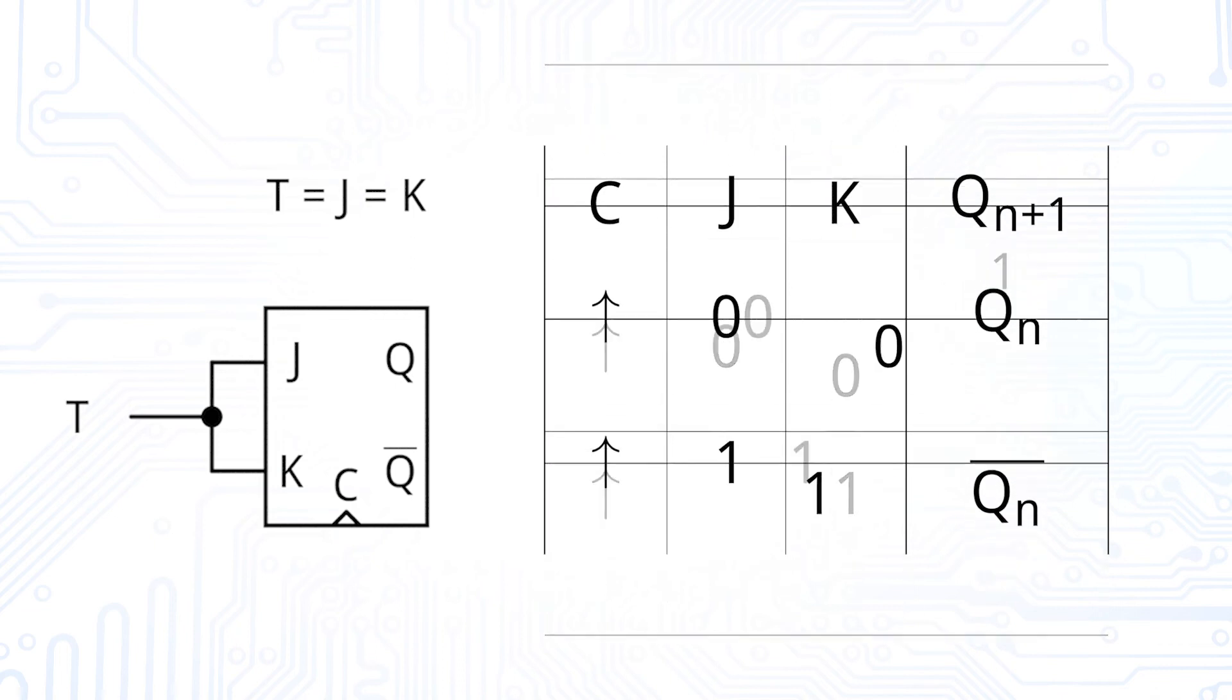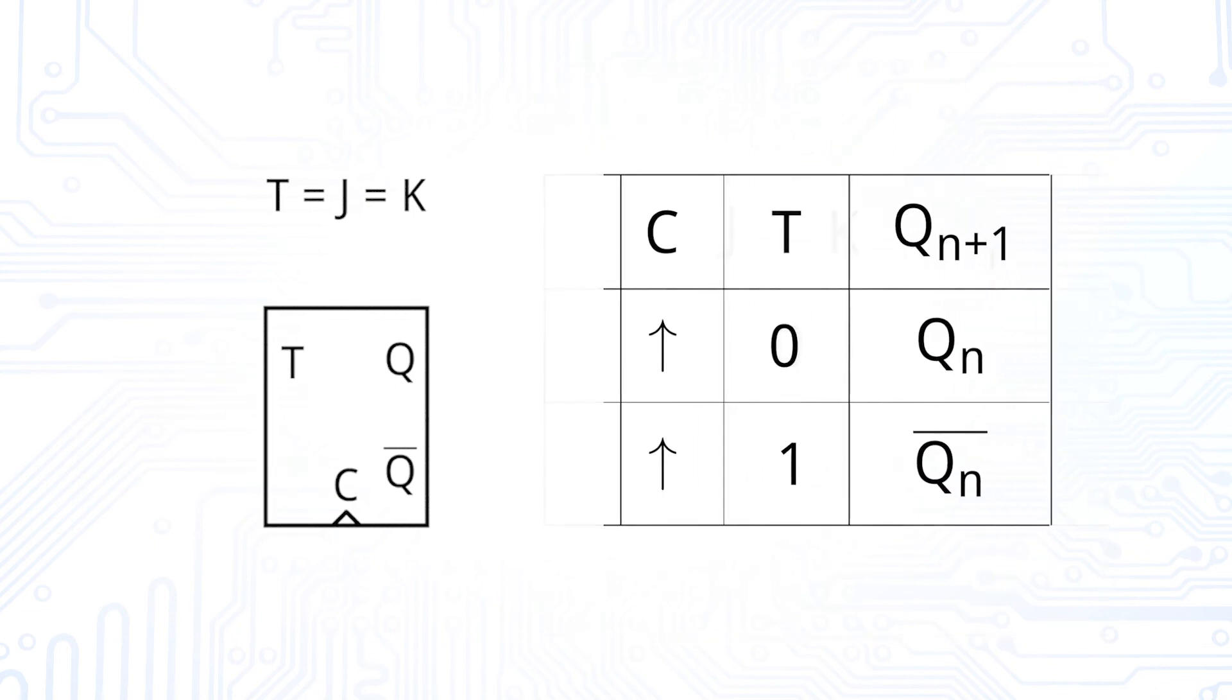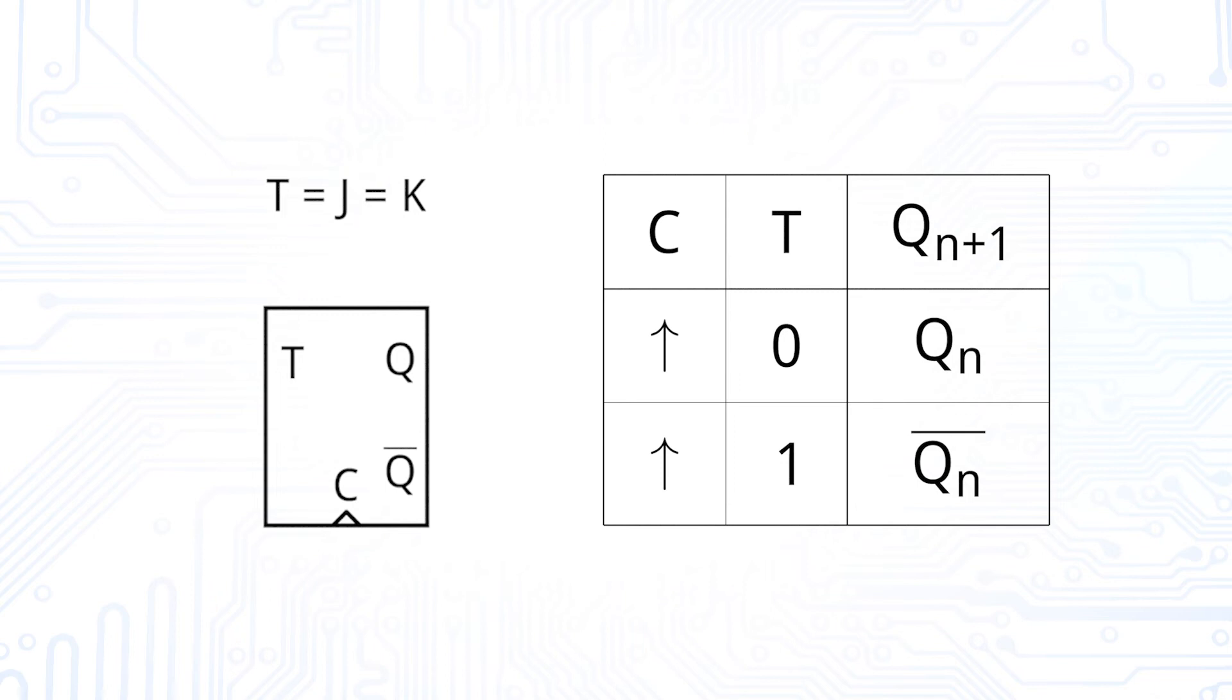This reduces the truth table to two rows. If T is low, the output remains the same. If T is high, the output is toggled at the clock edge.